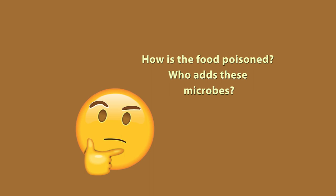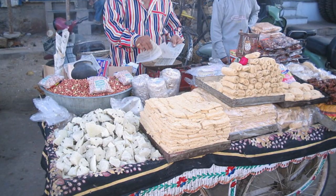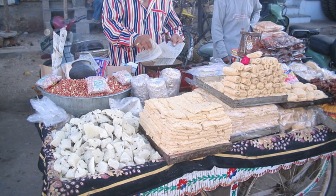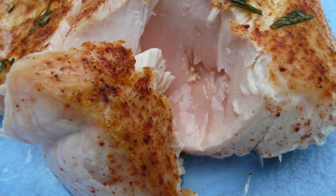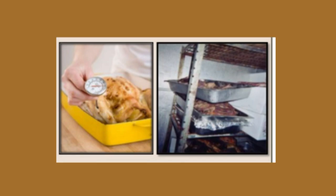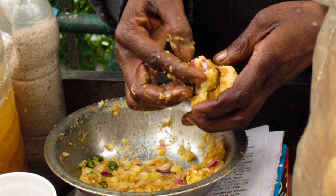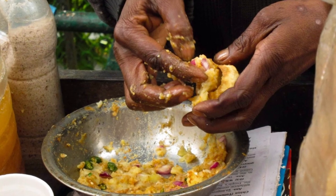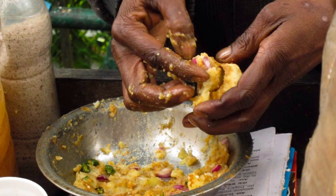But how is the food poisoned? Who adds these microbes? Most often food gets poisoned when it is mishandled — left uncovered for too long, not cooked properly, not refrigerated properly, or when handled by a person who did not wash their hands.